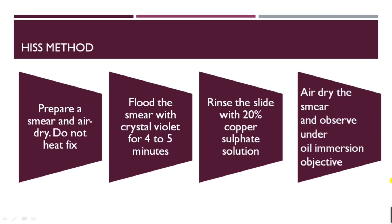To perform His method for capsule staining, prepare a smear, air dry but do not heat fix the smear. Flood the smear with crystal violet — your primary stain — for about 4 to 5 minutes. At the end of 5 minutes, rinse the slide with 20% copper sulfate solution, which acts as both a decolorizer and counter stain. Do not use water to wash the smear. Once washed with 20% CuSO4, air dry the smear and observe it under the oil immersion objective.